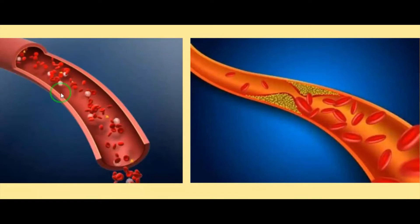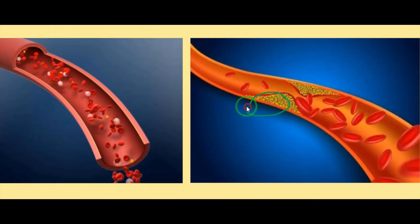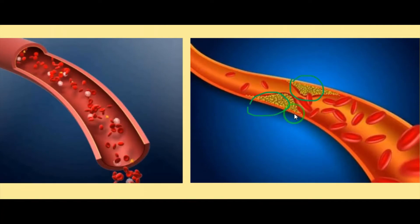Look at these two pictures. This is a normal artery — through this artery, blood can flow properly with high pressure, there is no blockage. But in this other artery there is a blockage: fat, cholesterol and other substances are deposited in the inner lining of the artery. Because of that, blood cannot flow properly. There is only a small gap, so blood cannot flow with high pressure. This condition leads to heart disease.